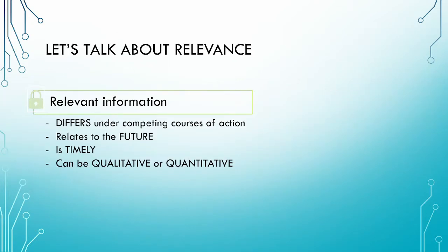Let's briefly talk about relevant information. In summary, relevant information differs under competing courses of action, it relates to the future, it is received in a timely manner, and it can be either qualitative or quantitative. If the information does not meet these criteria, it would be considered irrelevant. We need to consider whether joint costs meet these criteria, and we are going to use an example to determine if joint costs would be considered relevant for further processing decisions.